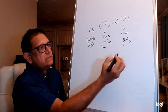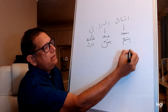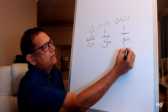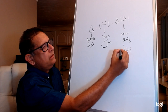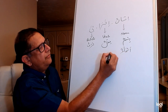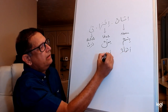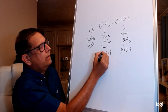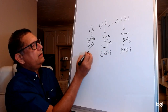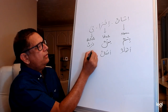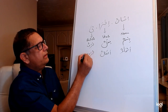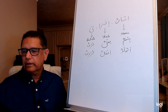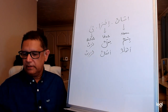The Arabic terminology is: noun we call it ism — ismun; verb is fi'l — fi'lun; and particle is harf — harfun. The plural of ism is asma'un, the plural of fi'l is af'alun, and the plural of harf is hurufun. That's our terminology.